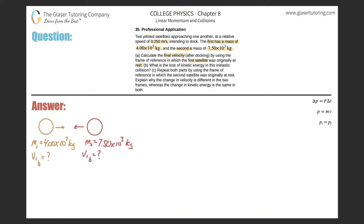For letter A, calculate the final velocity after docking using the frame of reference in which the first satellite was originally at rest. So the first satellite's initial velocity is 0 meters per second. Two objects coming together and sticking - this is a conservation of momentum problem, specifically an inelastic collision.